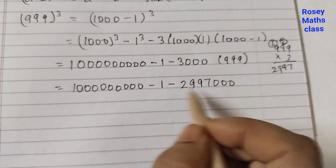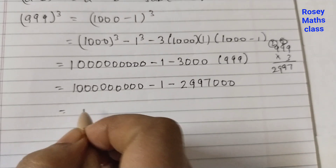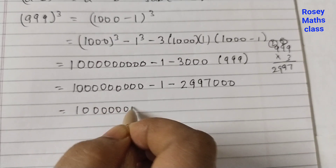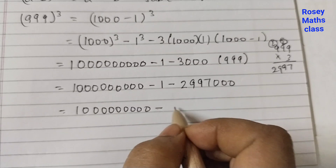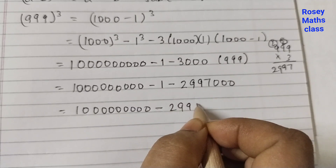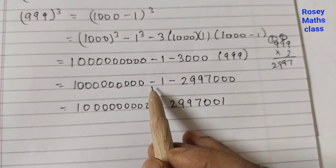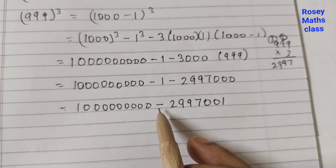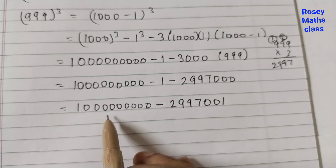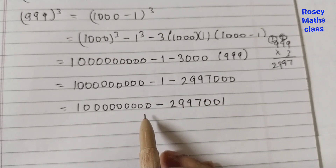Now these two are negative terms, so we just add them together with a minus sign. Adding 1 and 2,997,000 gives 2,997,001. We add them because they both carry a minus sign, as we learned in integers. The difficult part now is subtracting this number from the big number with zeros.